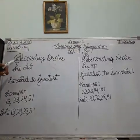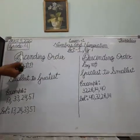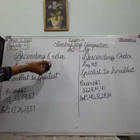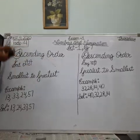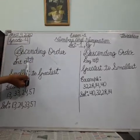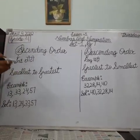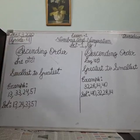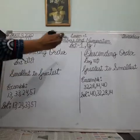Look at the board. A for ascending order. A for 'and'. And choti — chote se bada. This means smallest to greatest.